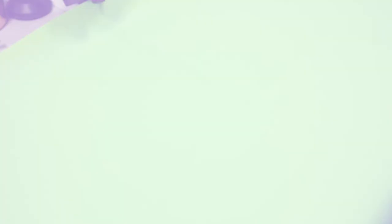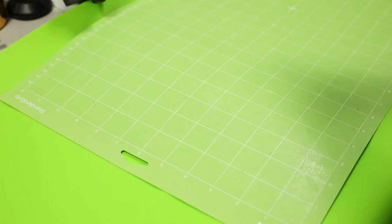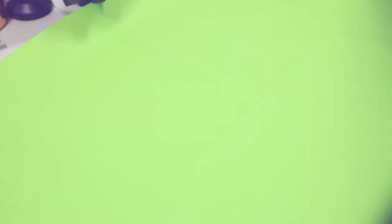For our stencil, we're going to use Cricut's permanent vinyl. We're using white, but it doesn't matter what color you use. Line up the vinyl with the standard grip cutting mat's corners and edges. The shiny side should be up. If there's bubbles, use a Cricut scraper to flatten the vinyl on the mat. Then load the mat.